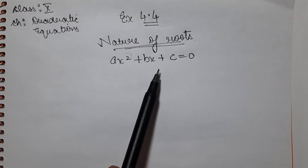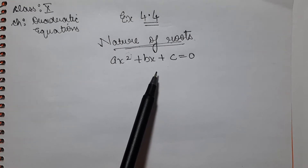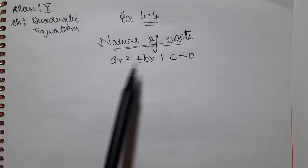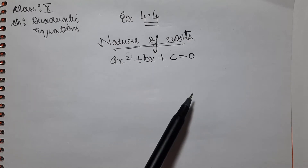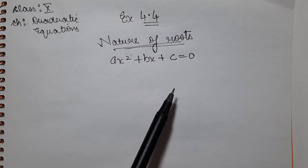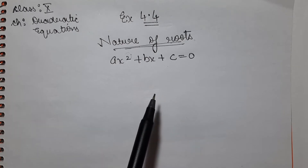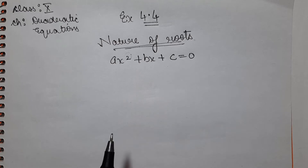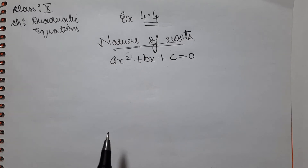What are the nature of those roots? Are they real or not? If it is real, then it is equal or unequal. This is the nature of roots and we have to study this exercise. We have a formula called the discriminant, which we used in exercise 4.3, to decide the nature of roots.